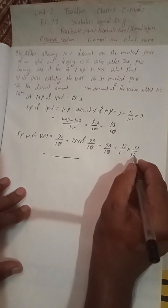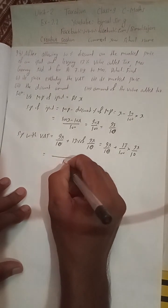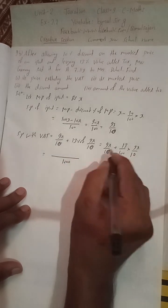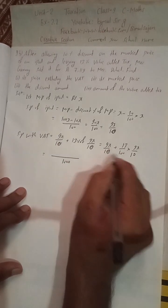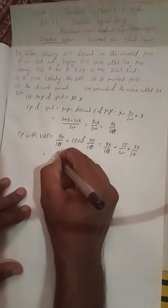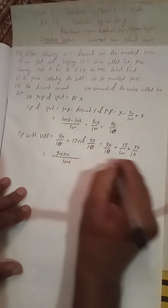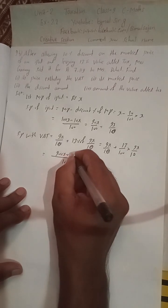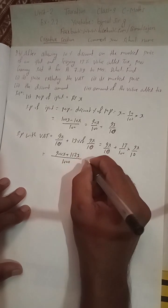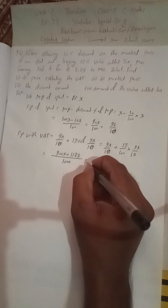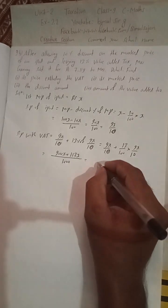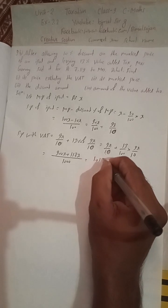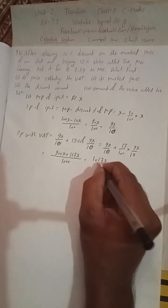The LCM is 1000, so multiply 9x by 10 by 100 to get 900x. Then 900x plus 13 times 9x equals 117x. When you add 900 plus 117, you get 1017x by 1000.